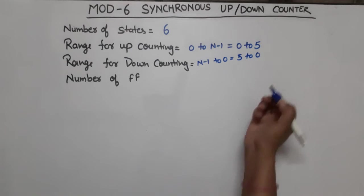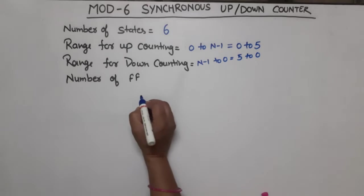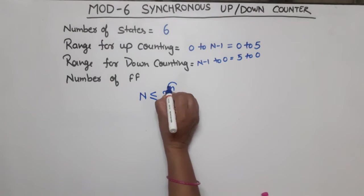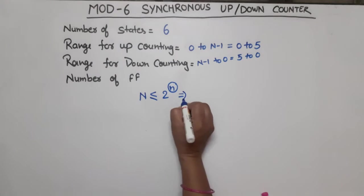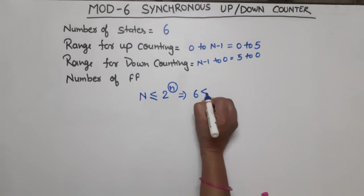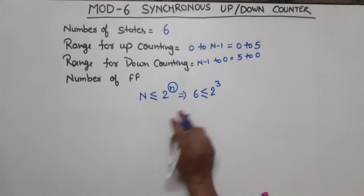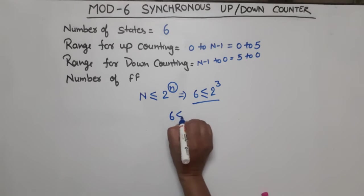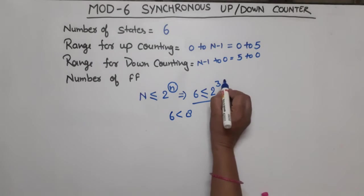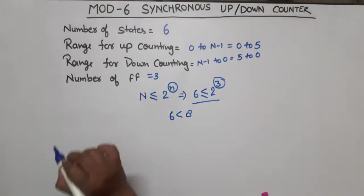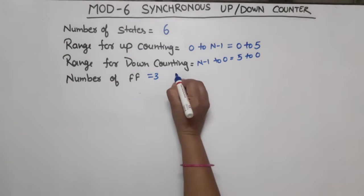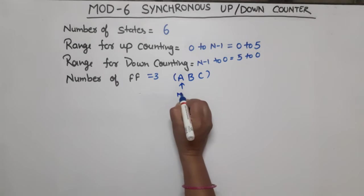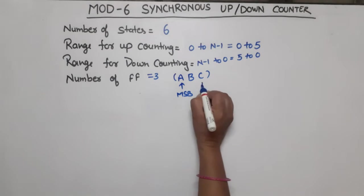Now, how many flip-flops are required? The condition is: capital N should be less than or equal to 2 raised to the power of small n, where small n is the number of flip-flops. Putting in values: 6 should be less than or equal to 2 raised to power 3. If we take n equal to 3, this condition is satisfied because 6 is less than 8. So 3 flip-flops are required. We assume these flip-flops are A, B, C — where C is the LSB bit and A is the MSB bit.